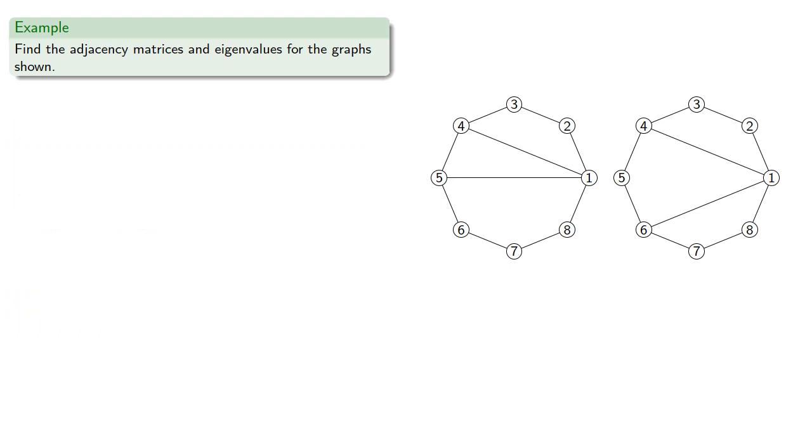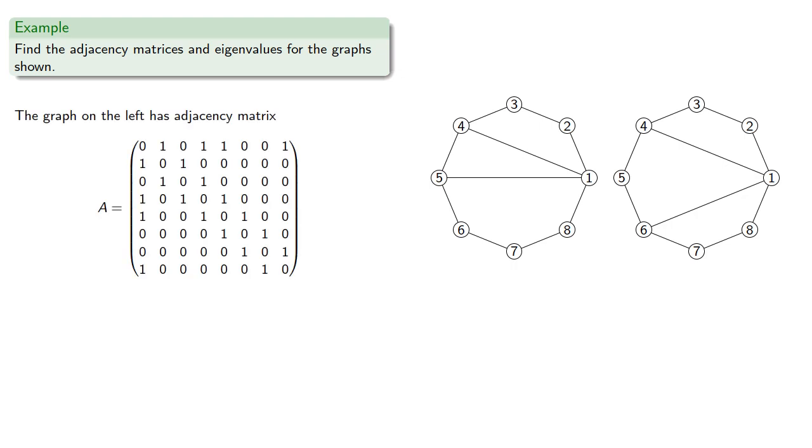For example, we'll find the adjacency matrices and eigenvalues for the two graphs shown. The graph on the left has adjacency matrix... And the eigenvalues are...